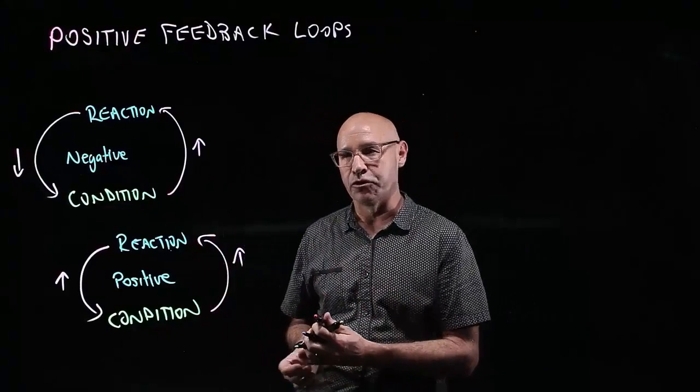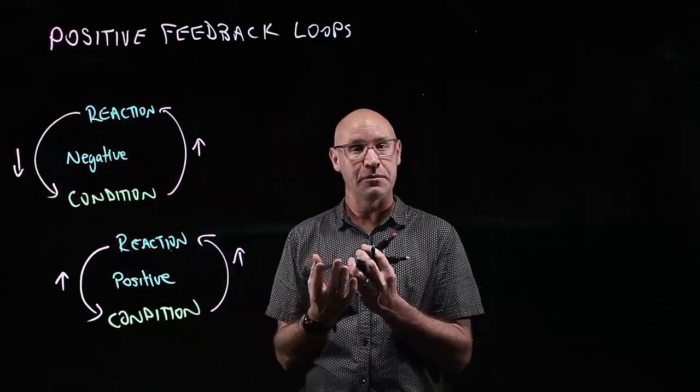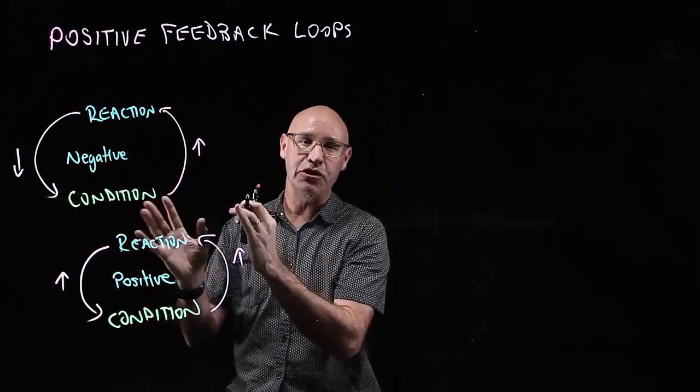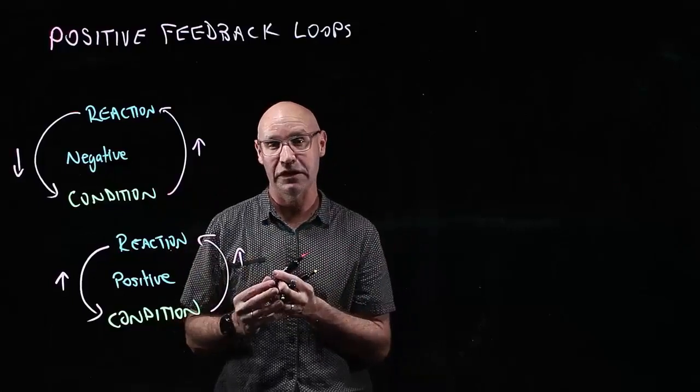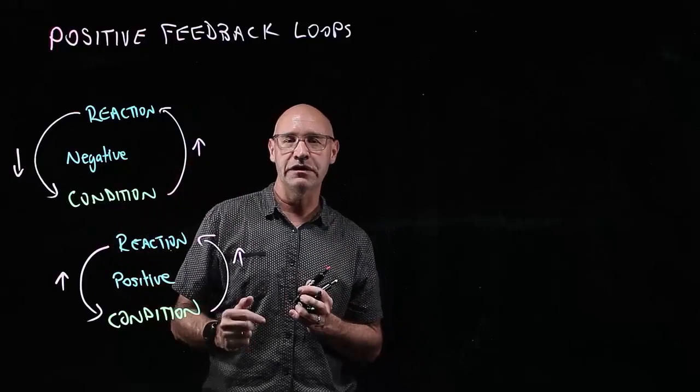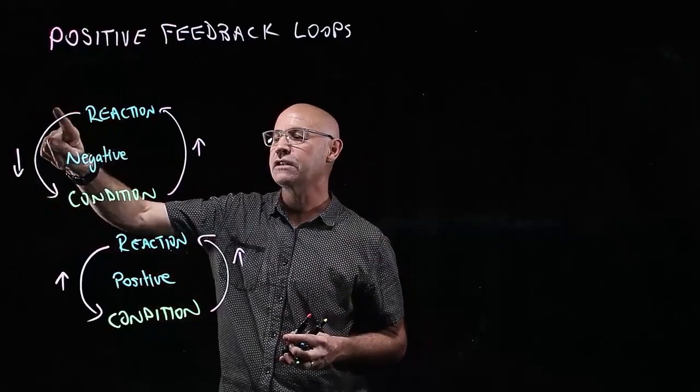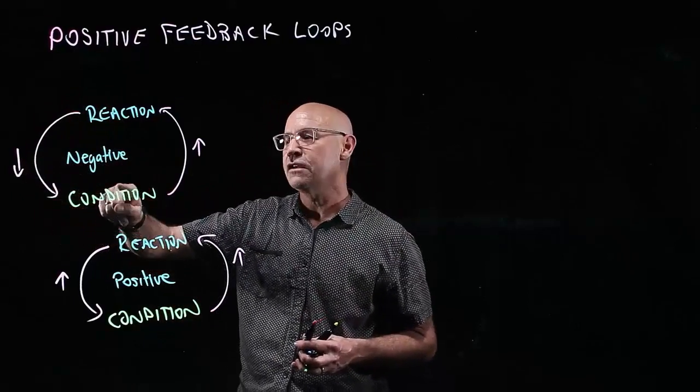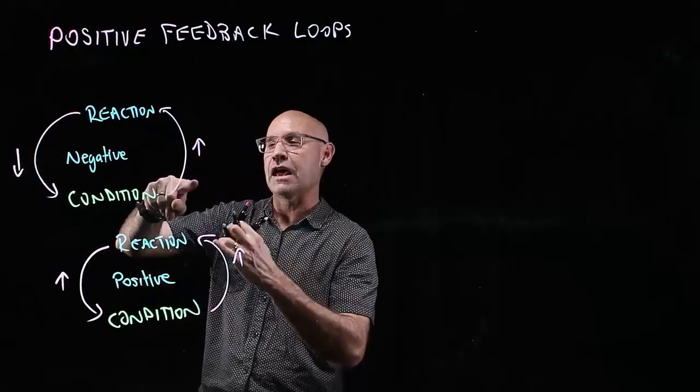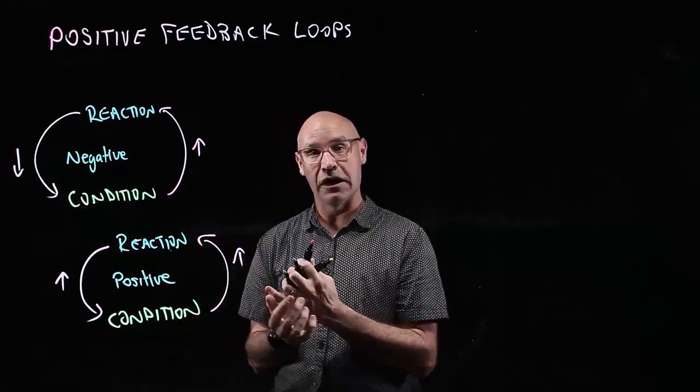In a negative feedback loop, the reaction brings the condition back to a stabilized normal position. This sort of feedback loop happens in the body all the time, for example with thermoregulation. The body temperature is set at 37 degrees. On a hot day, body temperature increases, so the reaction is to sweat and get red in the face, and that brings the temperature back down. So the reaction is in the opposite direction to the stimulus, bringing it back to the normal condition—that's a stabilizing effect.